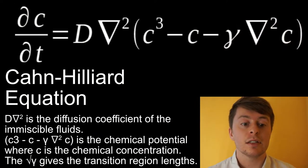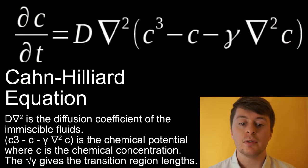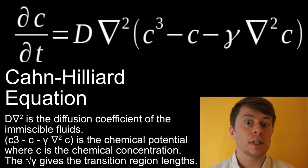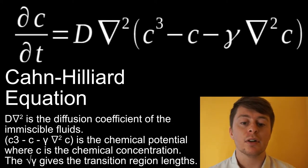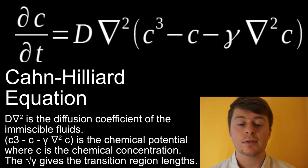Knowing that our two fluids are immiscible, we can treat them as two phases, studying the phase flow. This studies the fluid interaction and the effects on flow. This is explained with the Cahn-Hilliard equation, which describes diffusion of fluids with regards to the chemical potential. Chemical potential in this sense is the concentration of the fluids with regards to the transition region lengths.